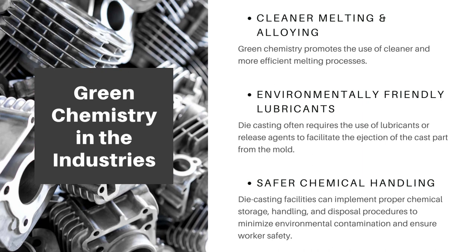Where does the die casting process use green chemistry? Die casting processes can incorporate green chemistry principles and practices to minimize their environmental impact. Firstly, cleaner melting and alloying. Green chemistry promotes the use of cleaner and more efficient melting processes. Technologies such as electric induction furnaces or energy efficient melting methods can be employed to minimize energy consumption and reduce emissions.